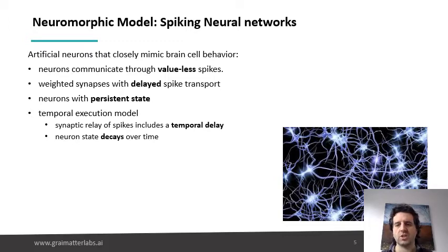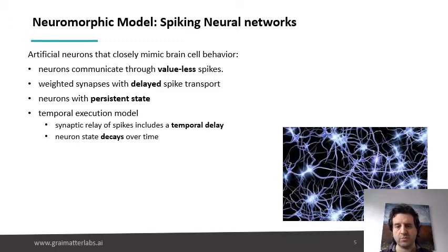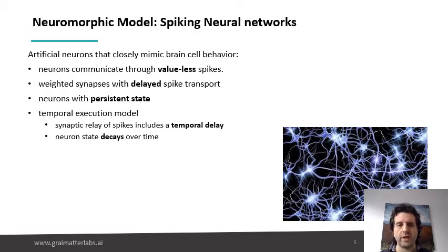And all the communication is asynchronous and based on events. One thing that we see often modeled is the temporal execution. It is known that signals take time to travel through synapses — that is an important property of the brain. Spiking neural network models try to model this by actually assigning an amount of time that it takes for a signal to be transported by a synapse from a producing neuron to a consuming neuron.